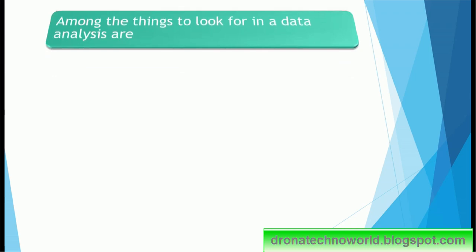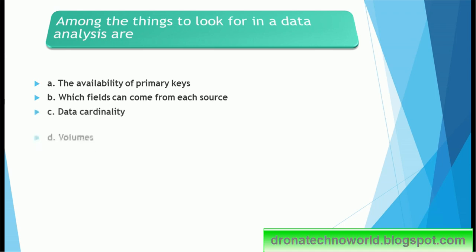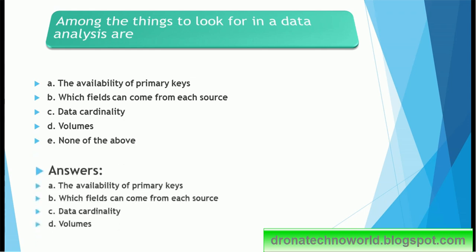Next question. Among the things to look for in a data analysis are: the availability of primary keys, fields which can come from each source, data cardinality, volumes, or none of the above. So which attributes will you consider for analysis? The correct answer is the availability of the primary keys, fields which can come from each source, data cardinality, and volumes. That means all of these.